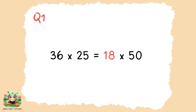Question one. You could have worked this out the long way by calculating 36 times 25, finding the answer and then dividing by 50. But there's a shortcut: because 50 is exactly double 25, you would need to halve 36 to make 18. If one of the numbers is twice as big, the other number needs to be half as big — so the answer is 18.